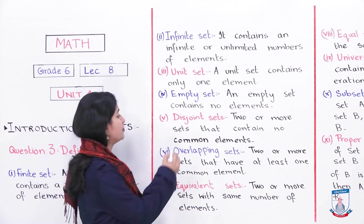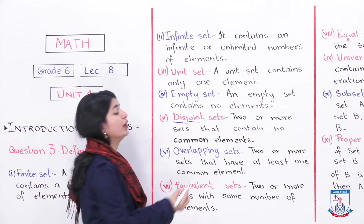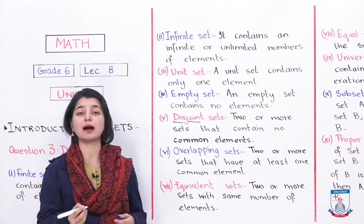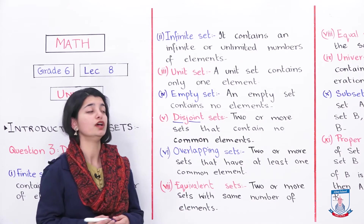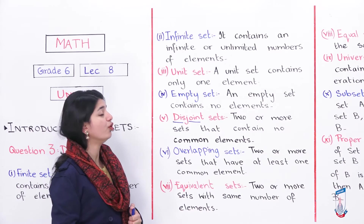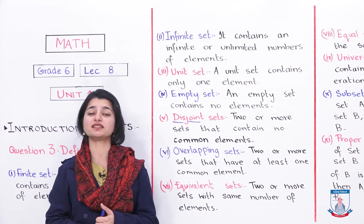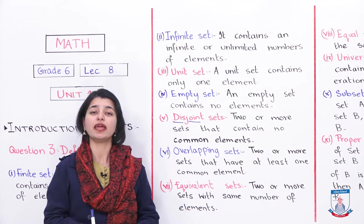The next definition is disjoint sets. Disjoint means not joint. Two or more sets that contain no common elements are called disjoint sets. They are two different sets with nothing in common.